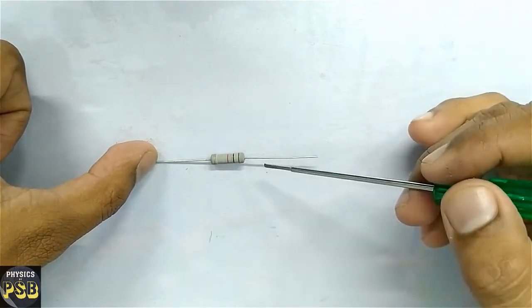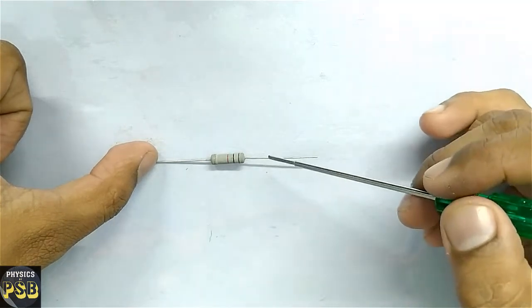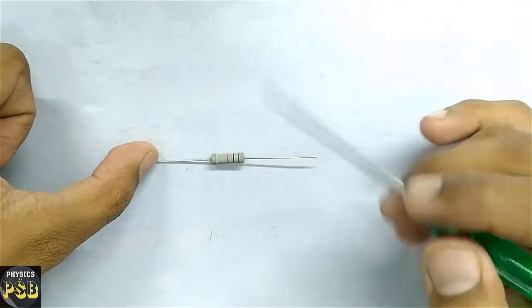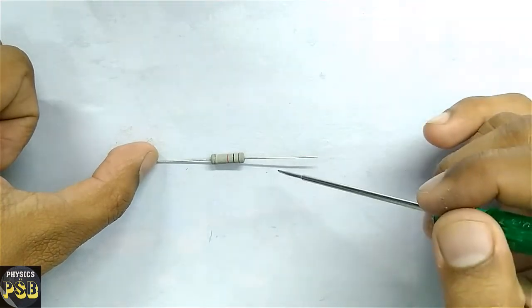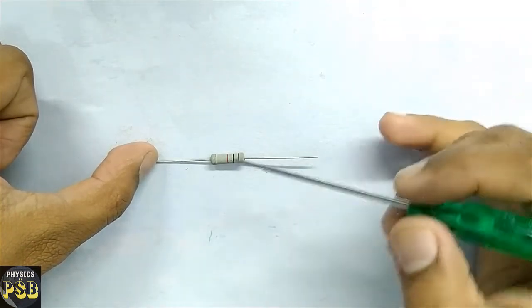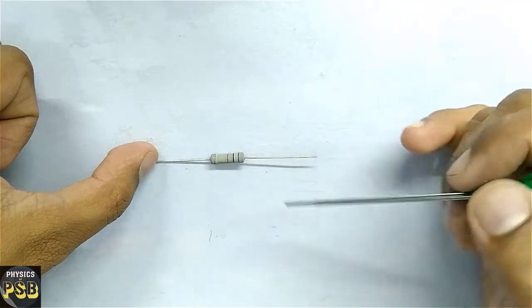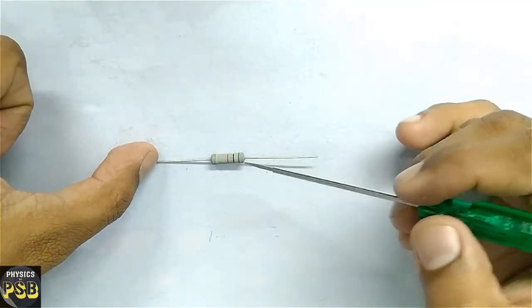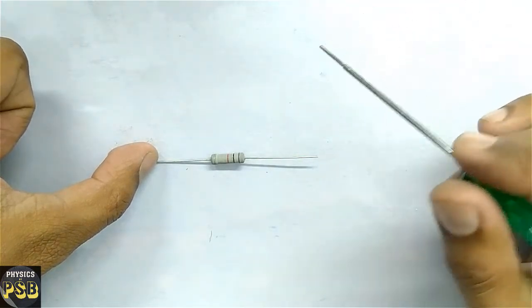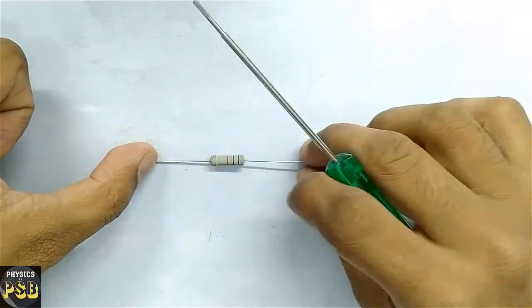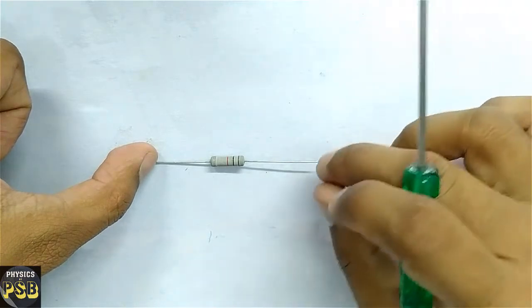These kinds of resistors are inexpensive and highly stable. They are provided with color rings which tell us the resistance of these resistors.